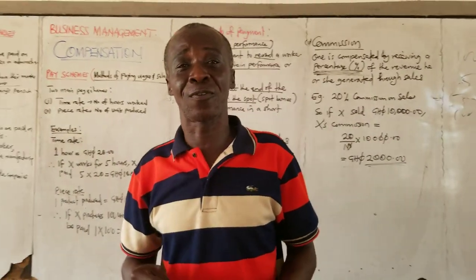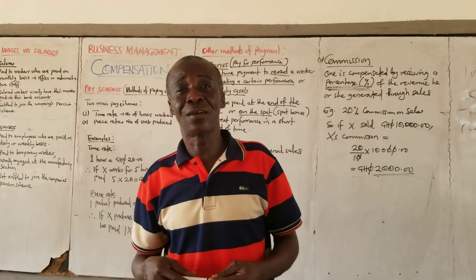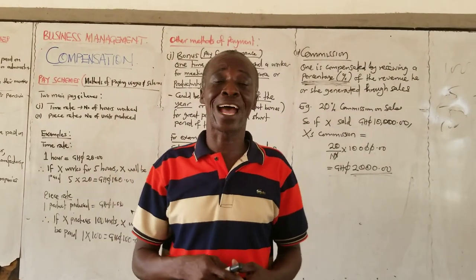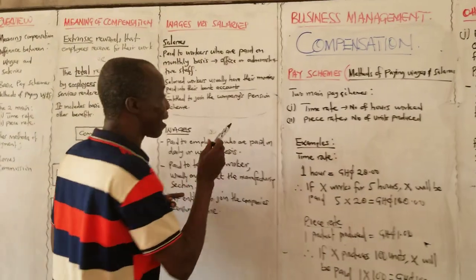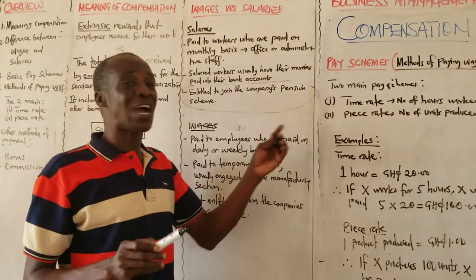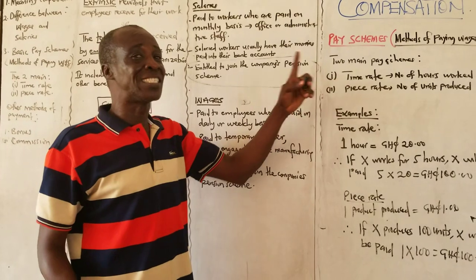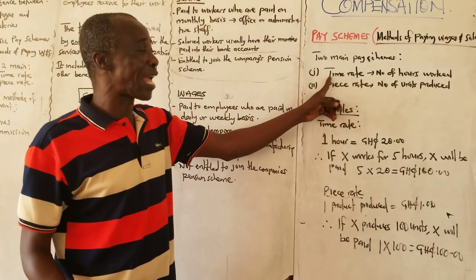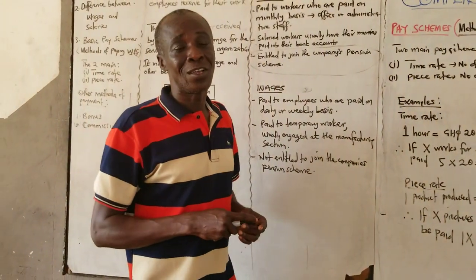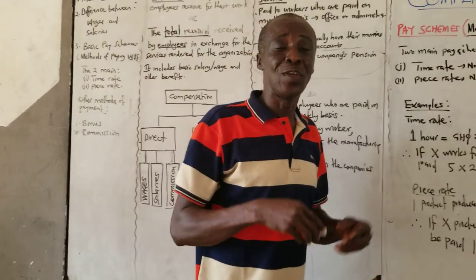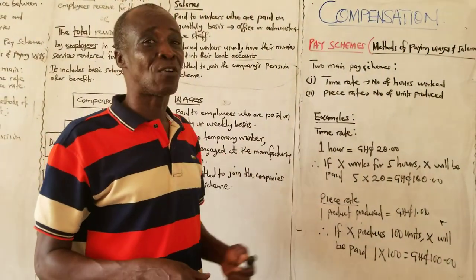Ladies and gentlemen, that brings us to the end of our topic on compensation. We know what compensation is, we know the two main basic pay schemes, and we talked about bonus and commission. For course students, we also discuss advantages and disadvantages of time rate and piece rate. The advantage of time rate is that quality of the product may be high because you are not paid according to the number of units you produce, so the person may take their time. But if you look at the piece rate disadvantage - quality may be affected because the person will rush to make more products in a day.